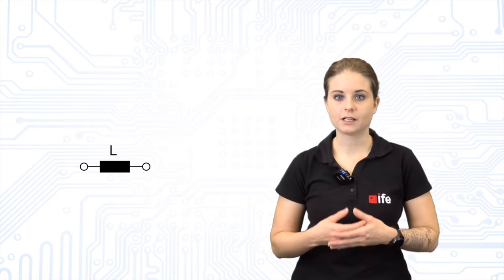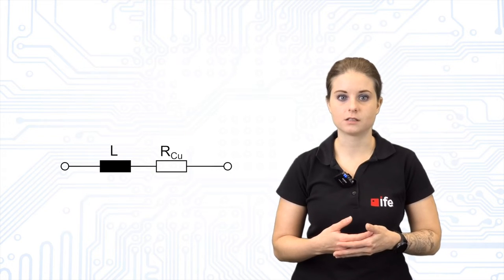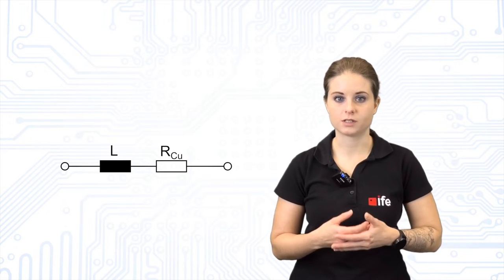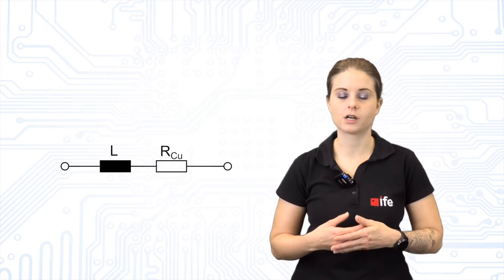In general an inductor has an equivalent series resistance similar to a real capacitor. The conducting wire is modeled as a serial resistance which represents the copper losses and is called RCU.